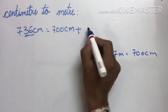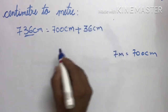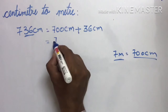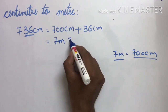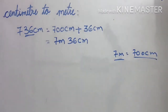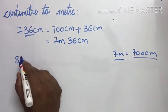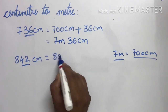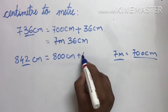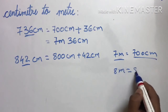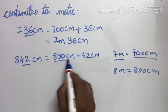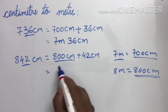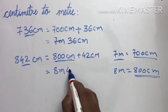Plus जिसको हमने 00 किया था उसको पीछे लिख लेंगे — 36 cm. 700 cm कितने meter होता है? 7 meter. तो इसकी जगह पे 7 meter और 36 cm. Done. 842 — simply ये दो number को 00 करो: 800 cm plus 42 cm. 800 cm कितने meter होता है? 8 meter. Simply ये दो 0 निकाल दो — 8 meter 42 cm. Understood?